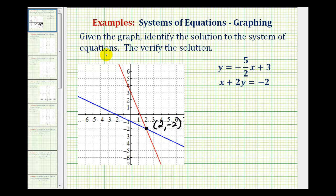We can say the solution would be the ordered pair two comma negative two. Or we could say x equals two and y equals negative two.